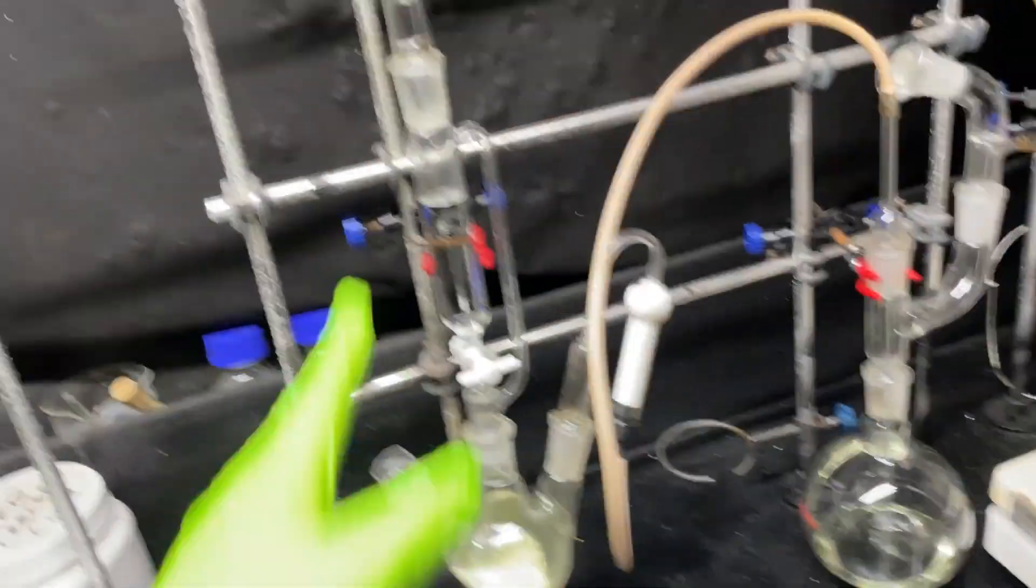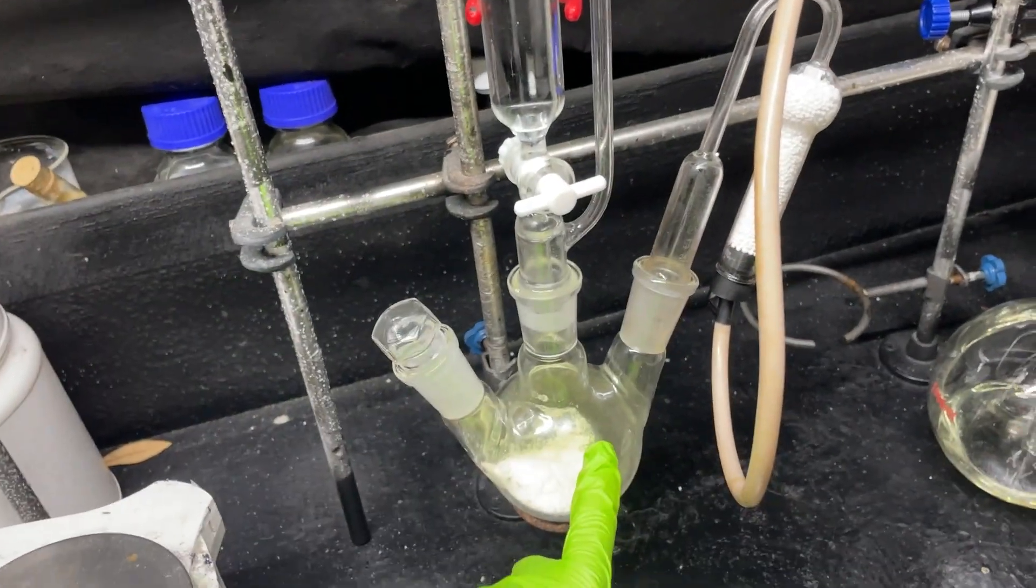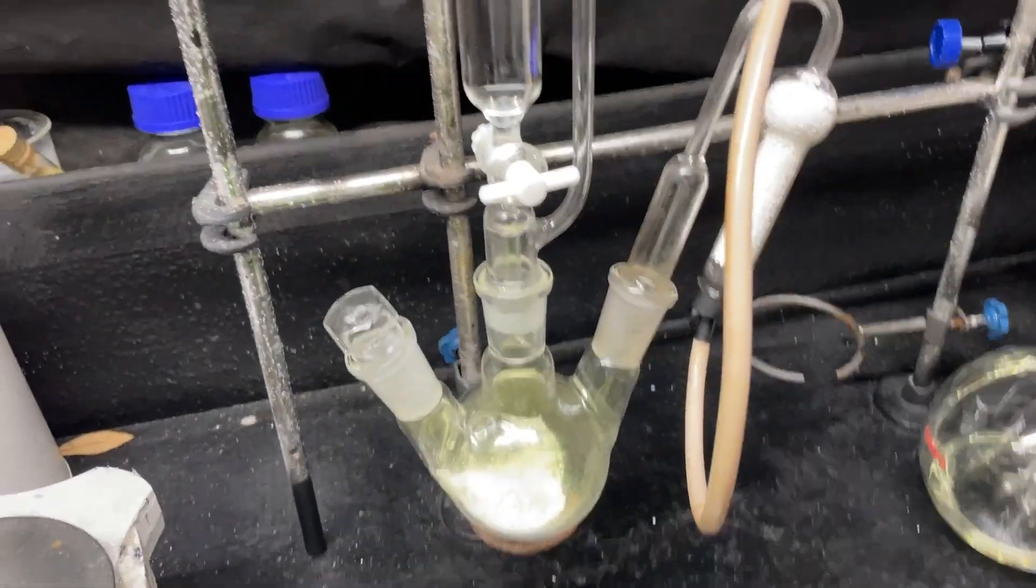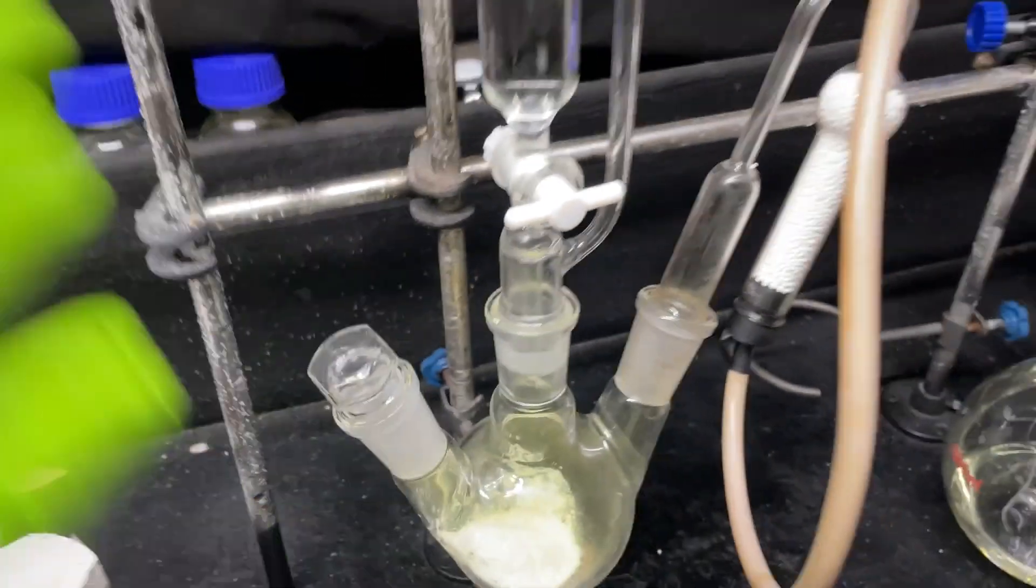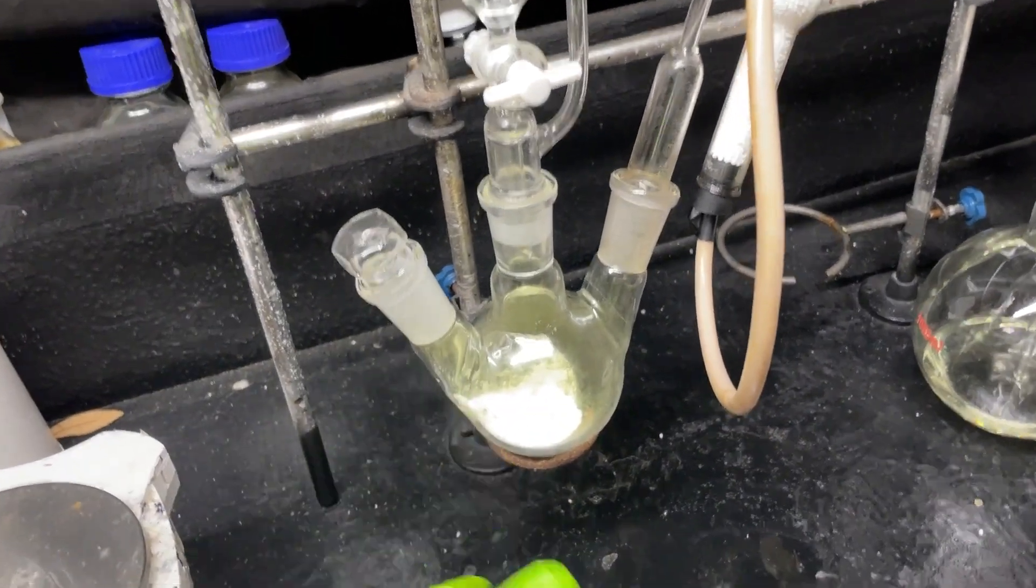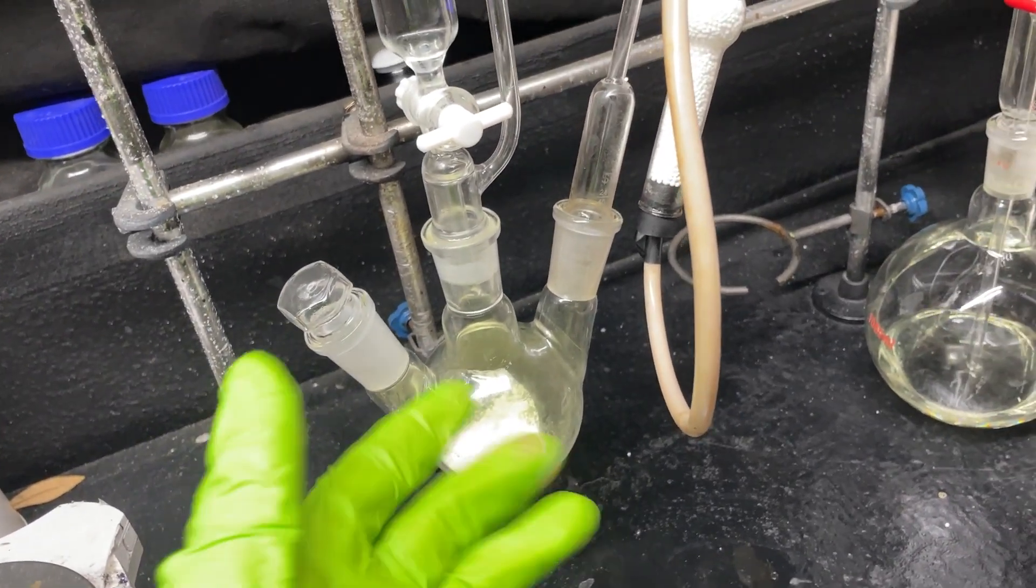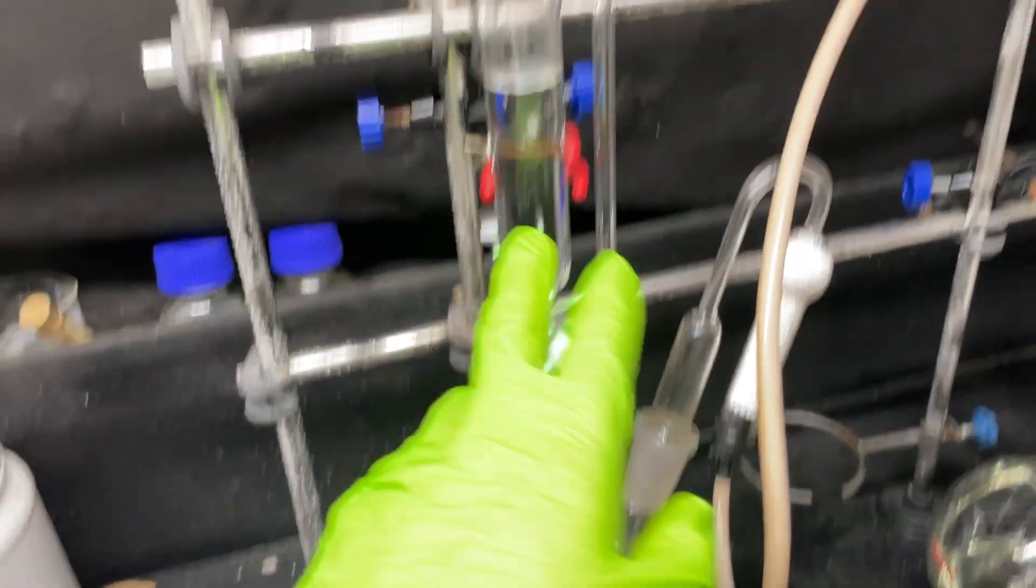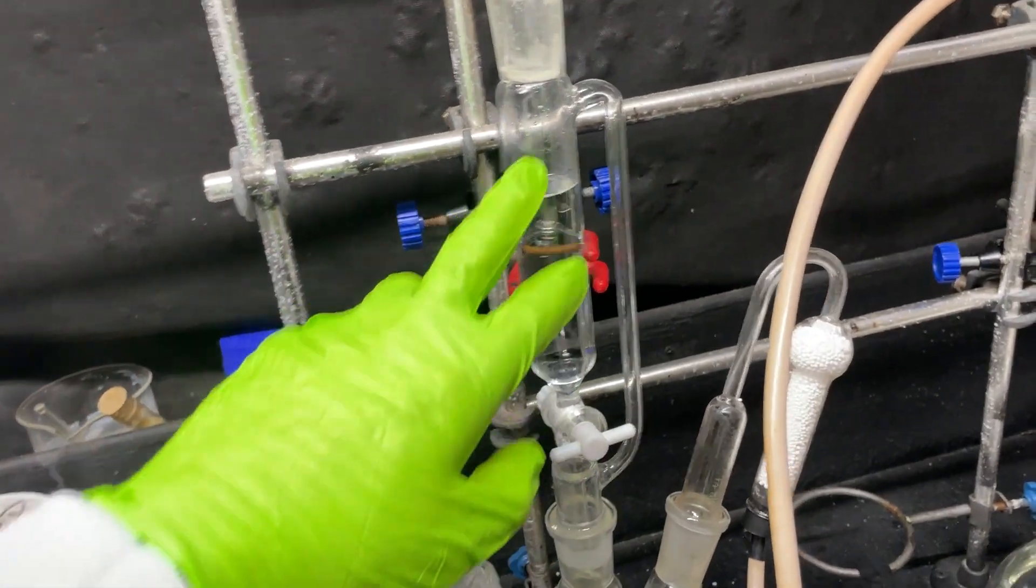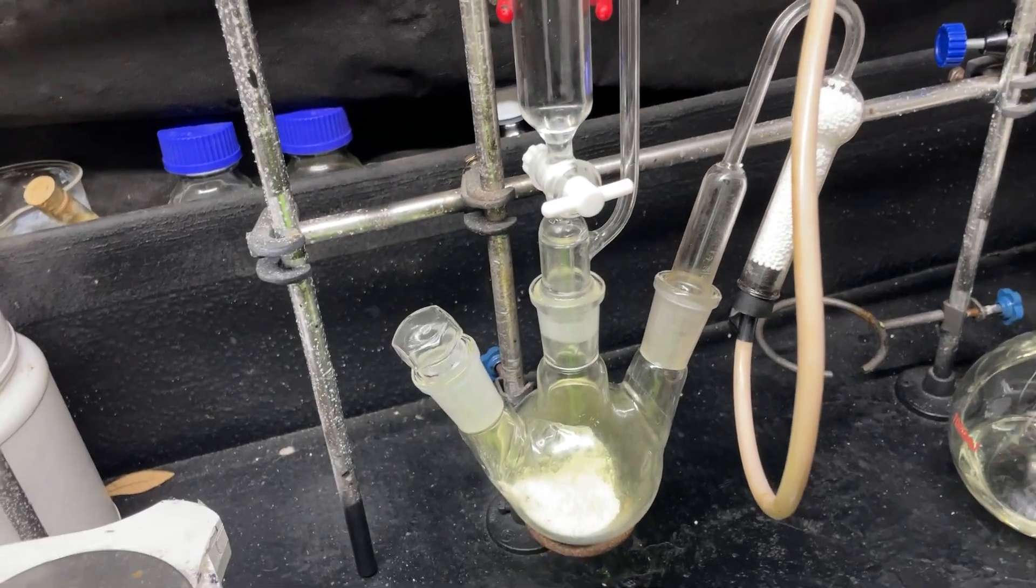So what is this whole contraption doing? Well over here we have a chlorine gas generator. That yellow gas you see in there is chlorine. Chlorine is an element but it was also used as a chemical warfare agent because it's highly reactive. So when you breathe it in it destroys your lungs - not a good way to go.